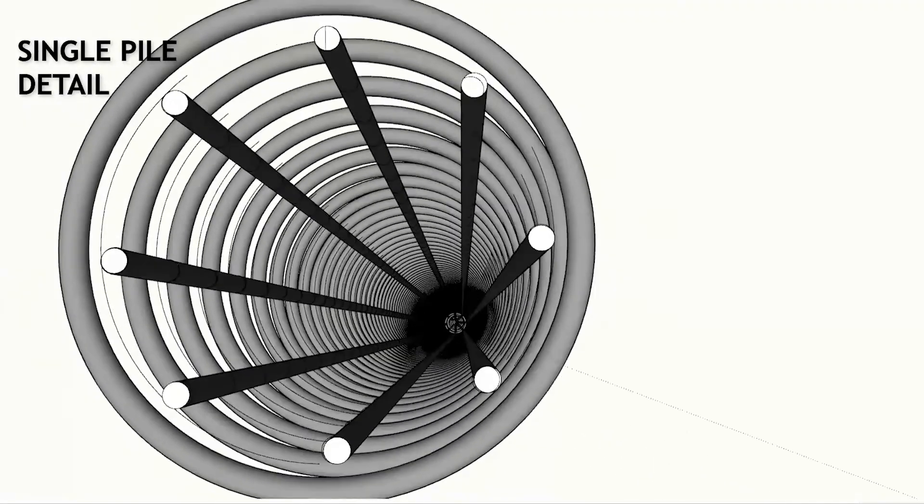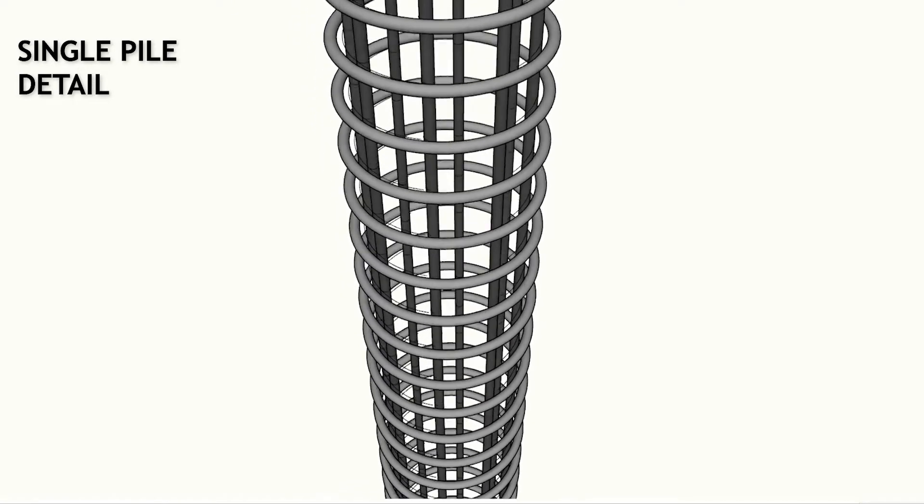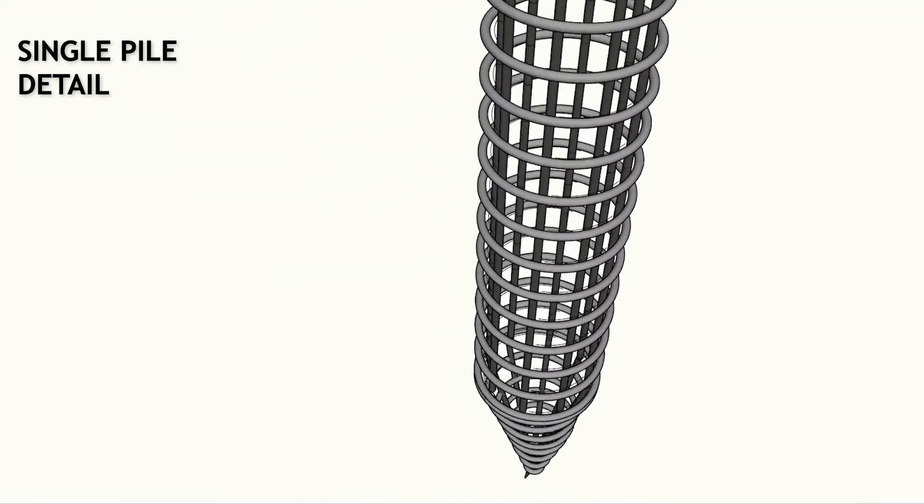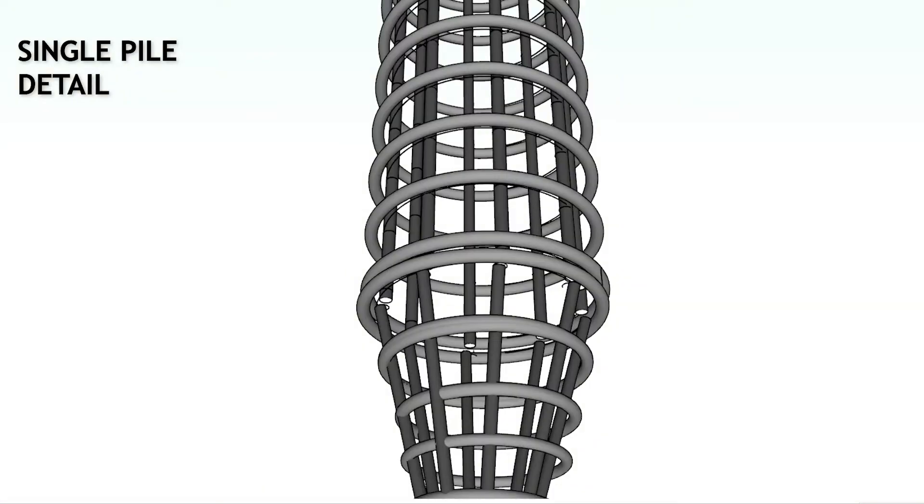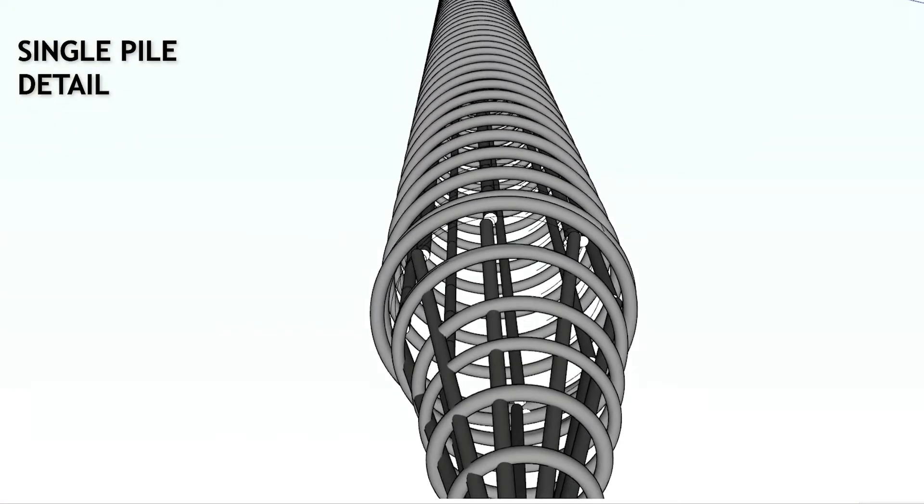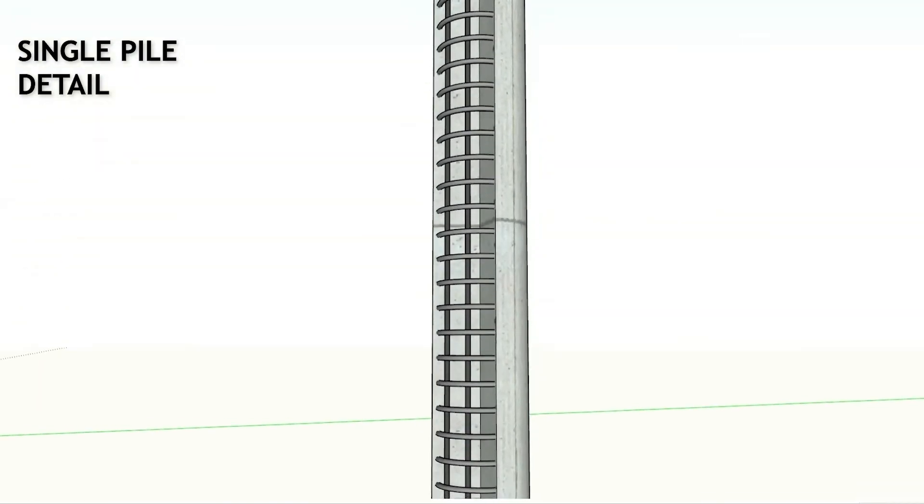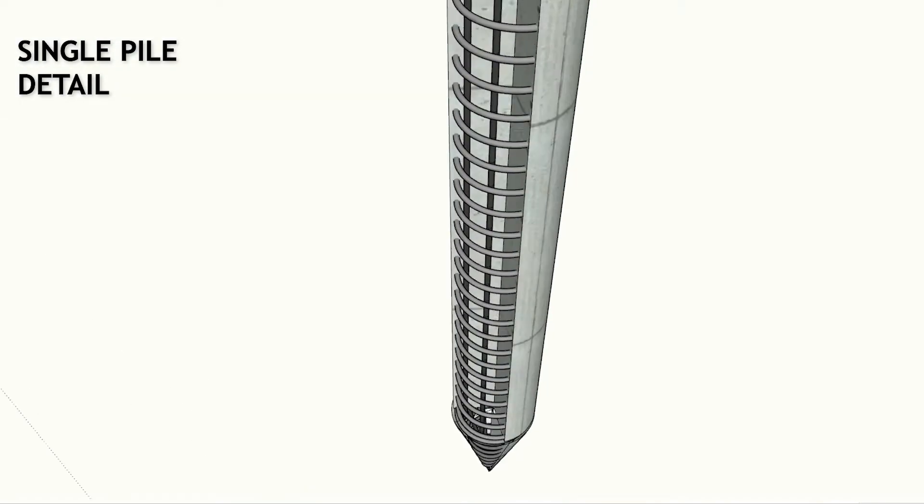Friction cum bearing pile foundation is being used, where single pile with 25 meters of depth and 750 mm diameter. The vertical reinforcement bars of 16 mm diameter and the horizontal ties of 12 mm diameter are being provided.